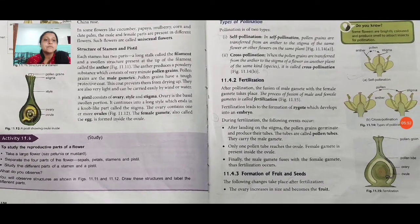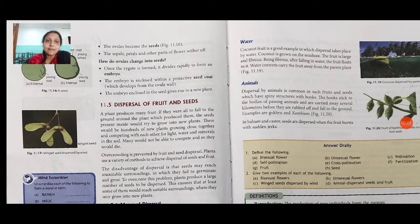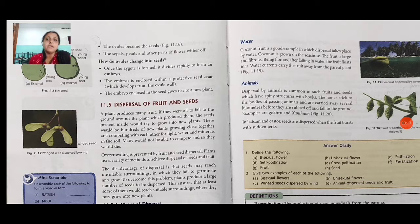Now formation of fruit and seeds: the ovary increases in size and becomes the fruit. The ovules inside the ovary become the seeds. The sepals, petals and other parts of the flower wither off. Once a zygote is formed it divides repeatedly to form an embryo. The embryo is enclosed within a protective seed coat, and the embryo enclosed in the seed gives rise to a new plant.